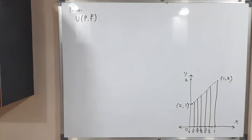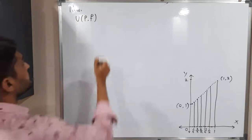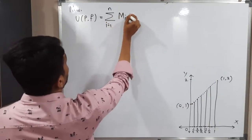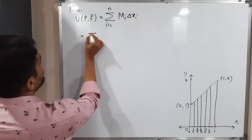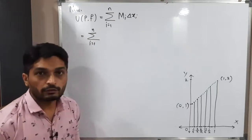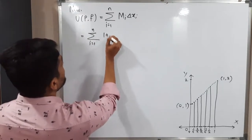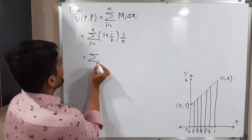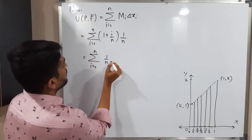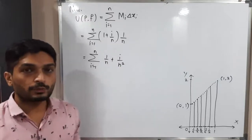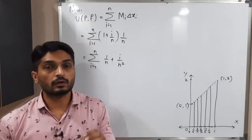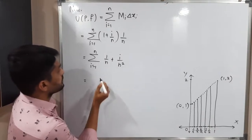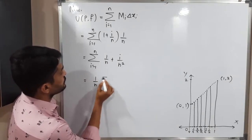Now let us find the upper sum U(P,f). The definition is: U(P,f) = Σ (i=1 to n) M_i · Δx_i. Substituting M_i = 1 + i/n and Δx_i = 1/n, we get the summation of (1/n + i/n²) for i from 1 to n.